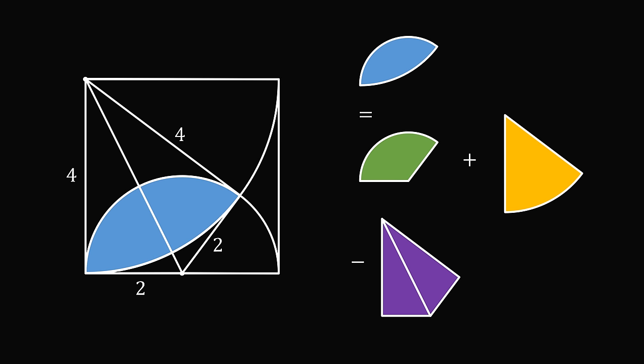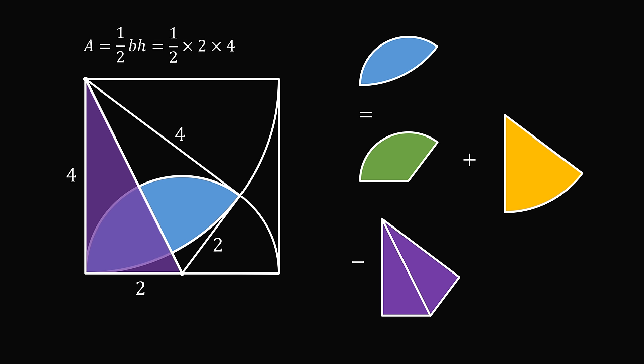Let's start with the easiest calculation, which will be the areas of the triangles. The area of a right triangle is equal to one-half its base times its height. In this case, we take 2 and 4, so this will be one-half times 2 times 4, which equals 4. So the area of a single right triangle is equal to 4. But we have exactly two of them and they are congruent, so the total area of two triangles will be 4 plus 4, which equals 8. So far, so easy.